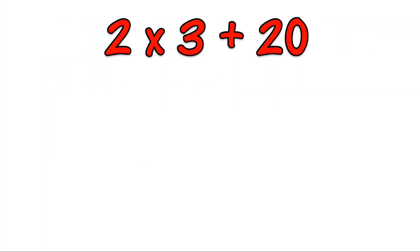Let us answer this equation: 2 times 3 plus 20, using the MDAS rule. Rule number 1: Multiply or divide first in the order as they come from left to right. 2 times 3 equals 6.